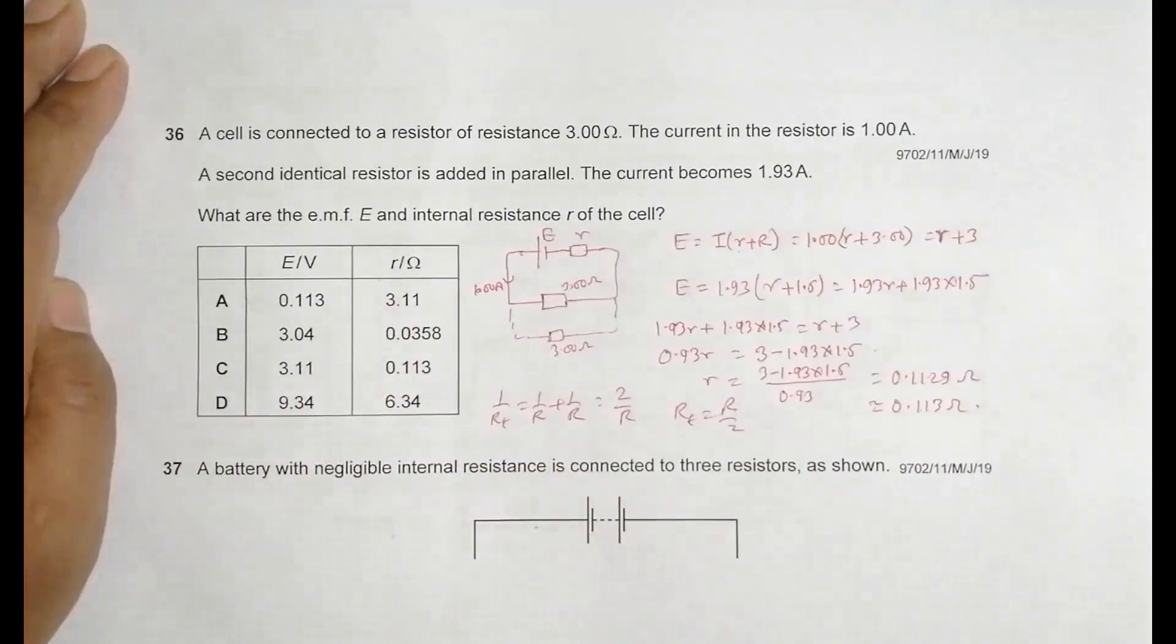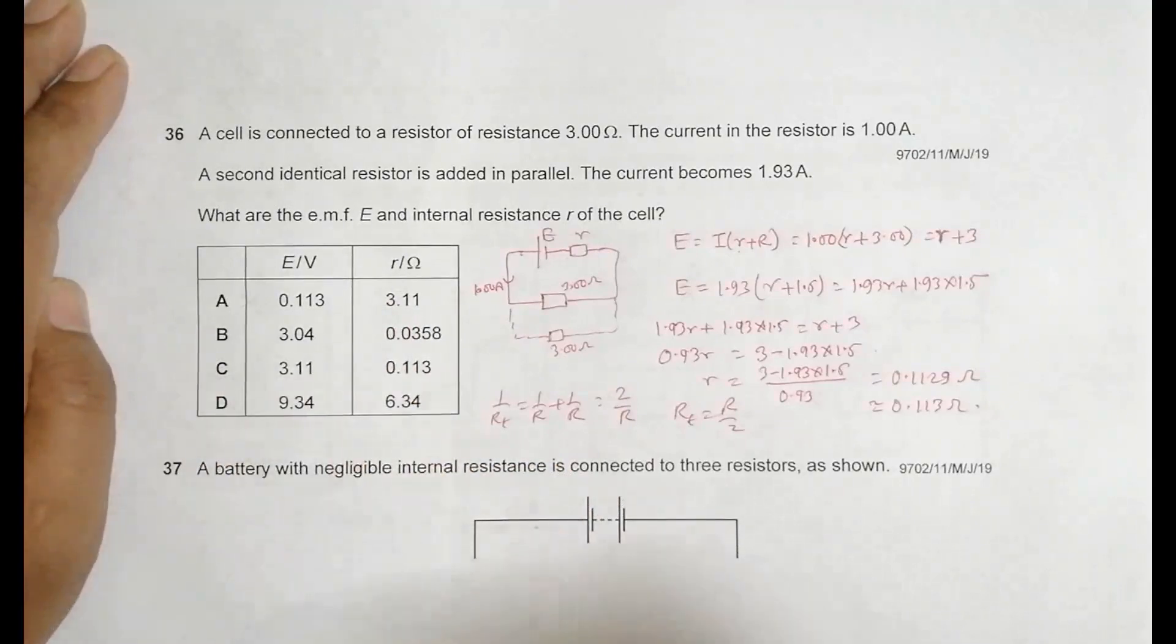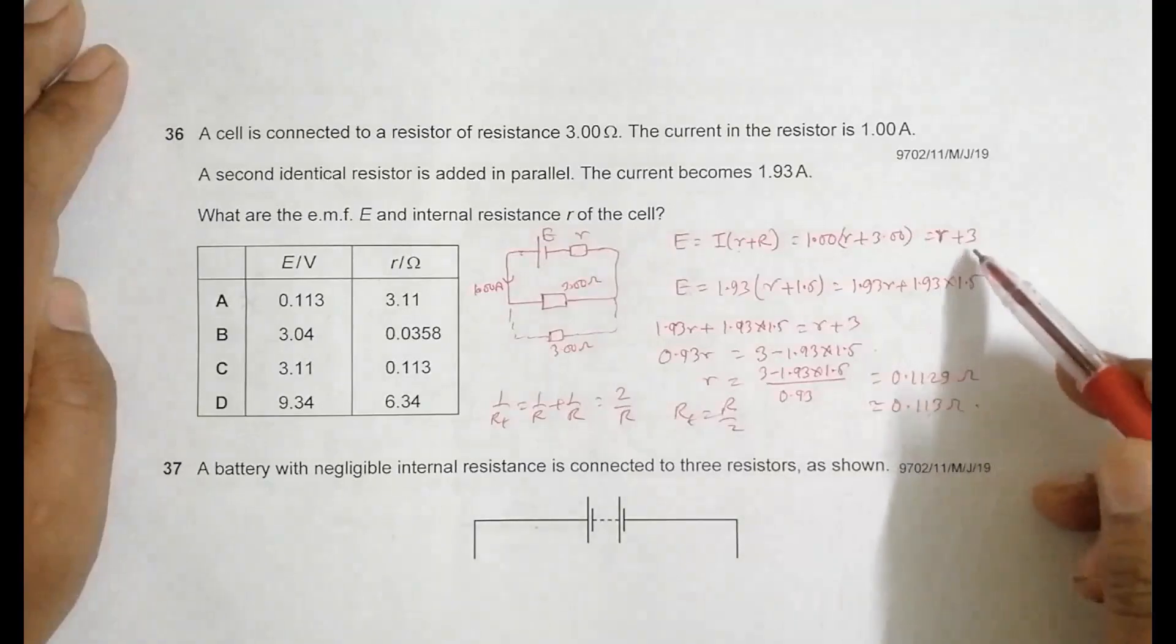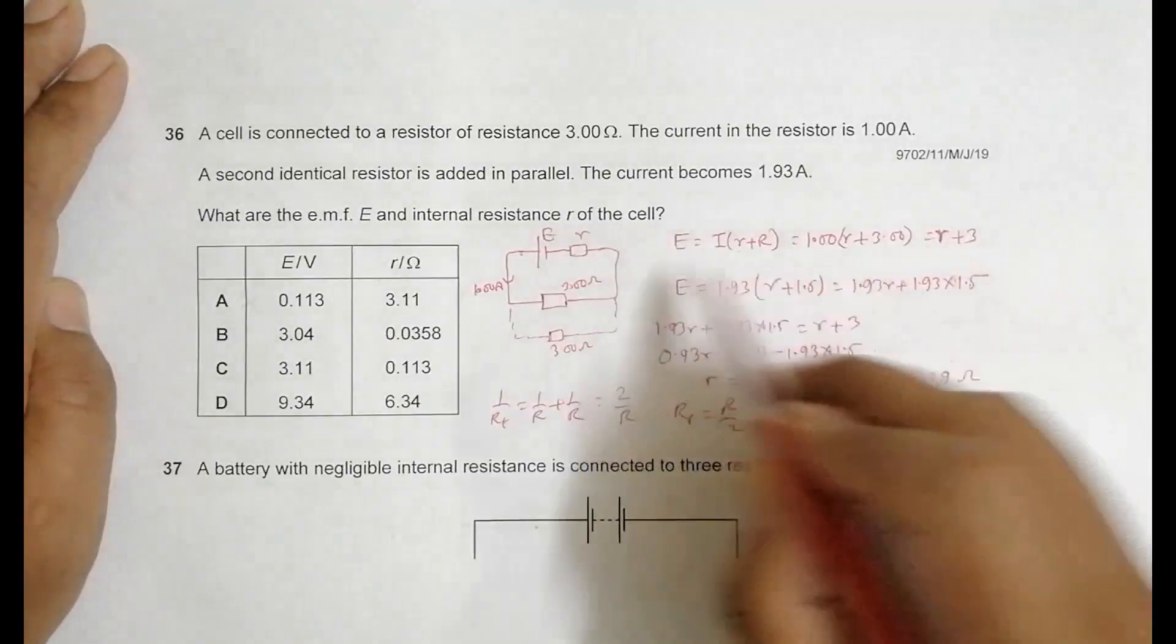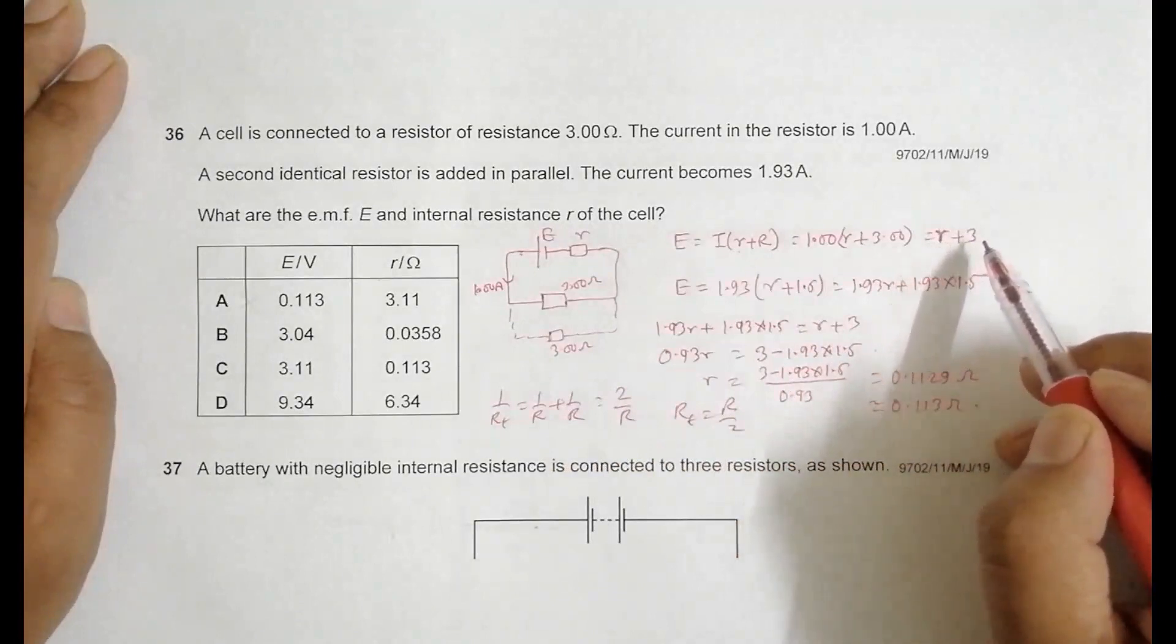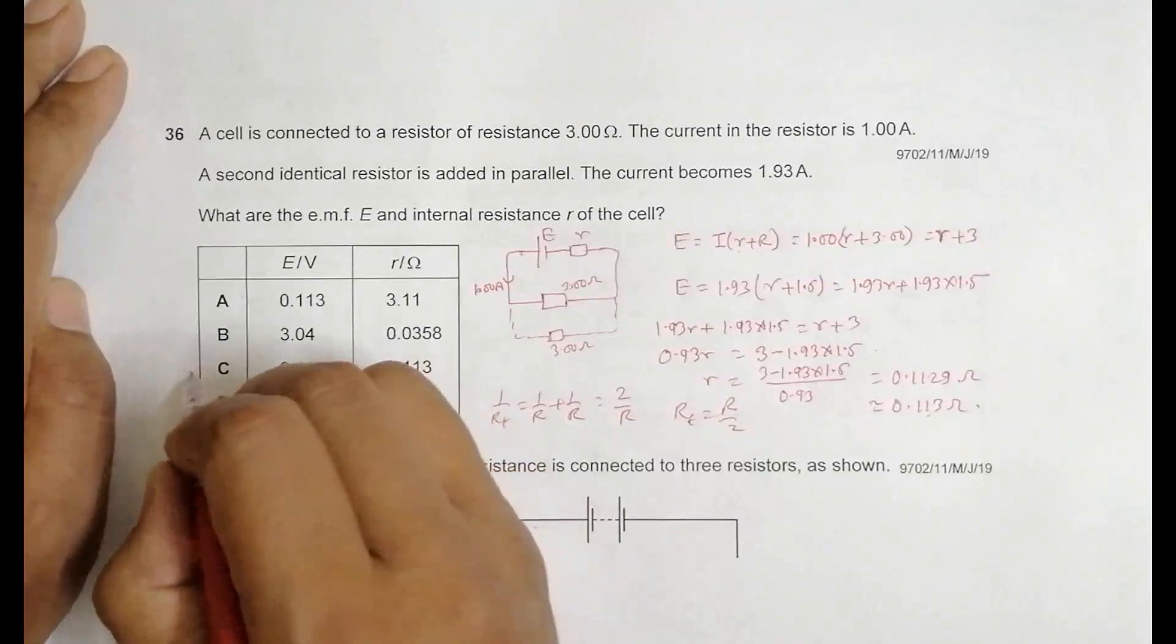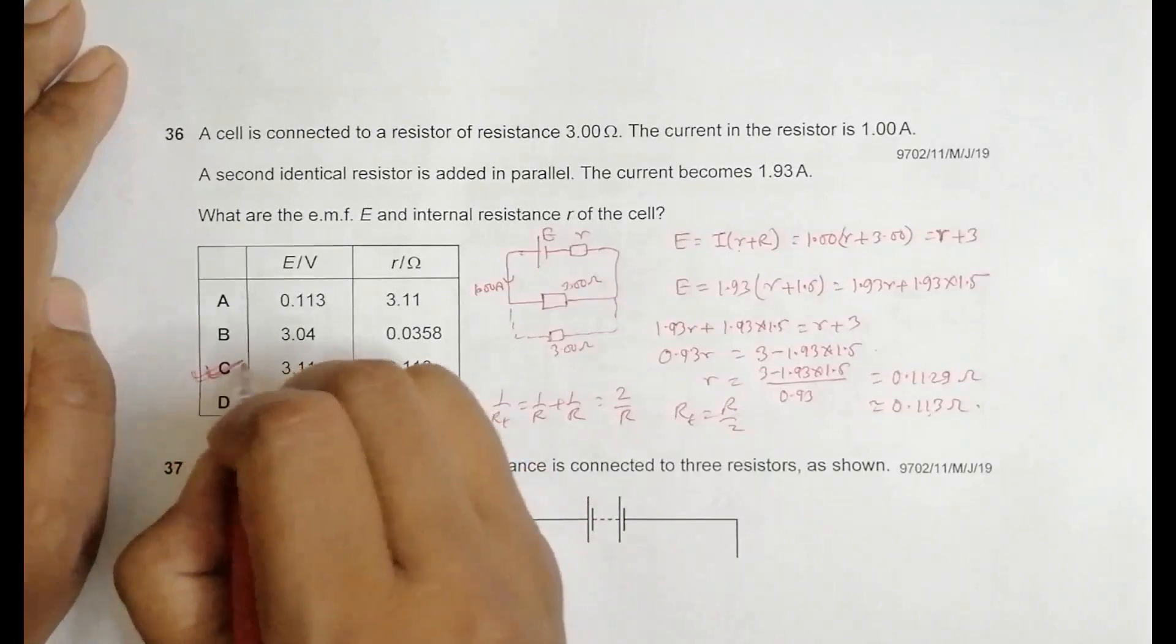This choice is available only in choice C, so this should be the correct answer. To confirm that for E, let's do the same. If I use this value here, E is equal to 3 plus 0.113, so it becomes 3.113, which is 3.11 when using three significant figures. The value of EMF also confirms, so choice C should be the correct answer.